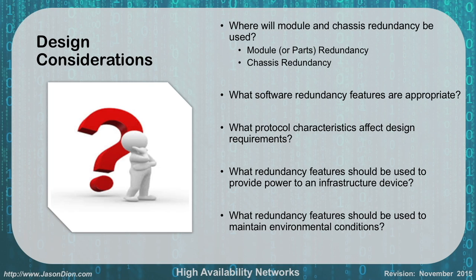These are the redundancy features to consider for high availability networks. Lastly, how are we going to handle redundancy for environmental controls — for example, two air conditioning systems servicing the room? If the air conditioning goes down, equipment will overheat and shut down. There are no exact right answers; it's all about budget and requirements. If you wanted the most available and redundant system, you'd have two of everything, but that costs double, and not all organizations can afford that.